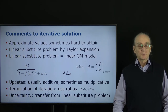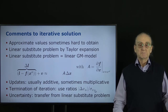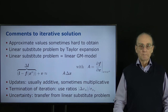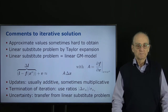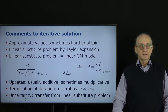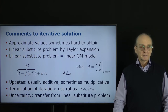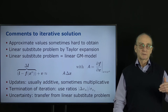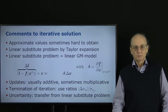The termination of iteration usually takes the ratios of all individual parameter corrections divided by some approximate standard deviation. At convergence, we transfer the uncertainty from the linear substitute problem to the non-linear original problem, assuming that the uncertainty transfers because we have only relatively small deviations — otherwise this would not be allowed.